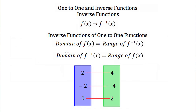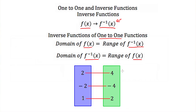Now that we know what a one-to-one function is, let's talk about inverse functions. When we have the inverse function, we're referring to the inverse of another function. If we have f(x), we would write the inverse as f⁻¹(x). This is the notation for the inverse function. For inverse functions of one-to-one functions, the domain of our original function equals the range of our inverse, and the domain of our inverse equals the range of our original function.